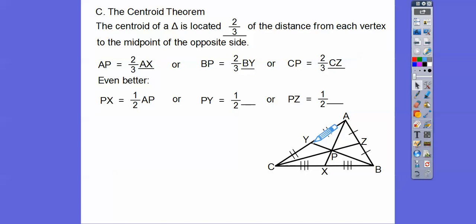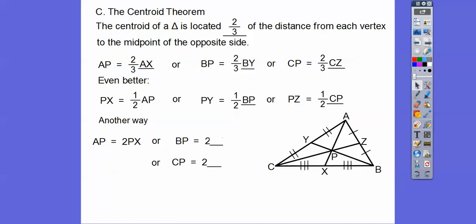So we can say that PX is half of AP. PY is half of BP, meaning this length is half of this length. Similarly, PZ is going to be half of CP. We can also think of it like this: AP is twice PX — this length is twice this length. And then CP is going to be twice PZ. Whichever relationship you like to use helps you solve problems.